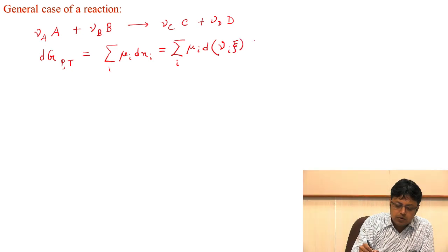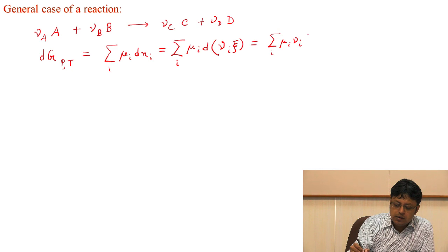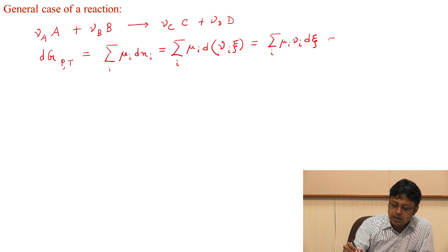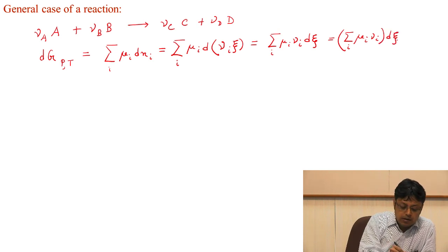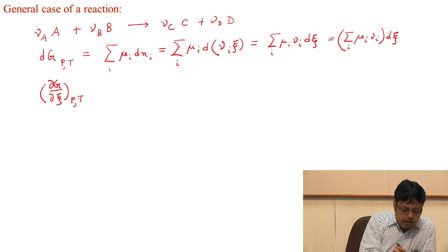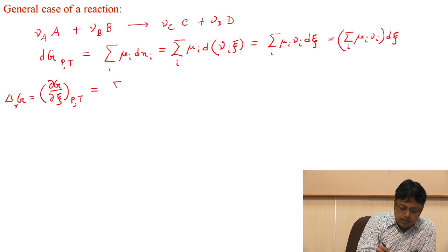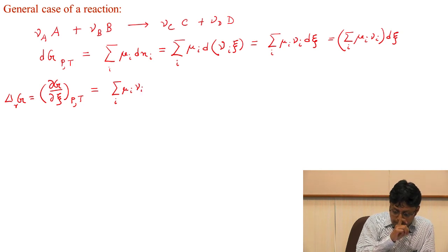For a differential amount, we can write it as μᵢ times dξ, since dξ doesn't have any index because it is independent of reactant or product. We can factor it out: it is the sum of μᵢ νᵢ times dξ. Taking the derivative of Gibbs free energy at constant pressure and temperature — what we call the reaction Gibbs free energy — that will be the sum over i of νᵢ μᵢ.